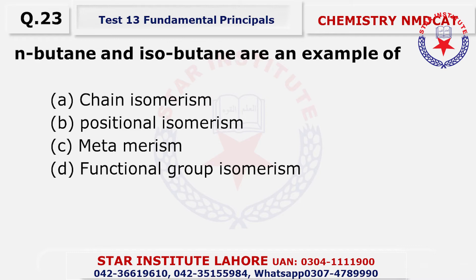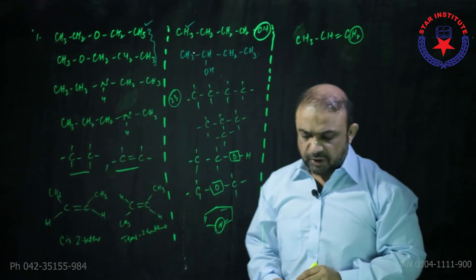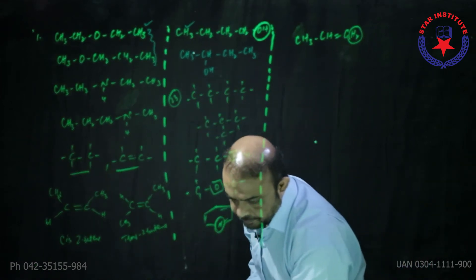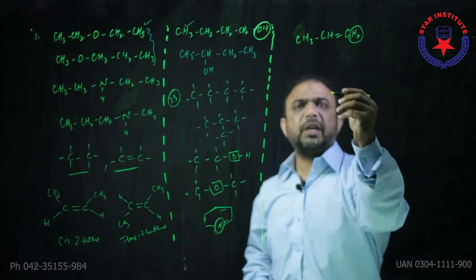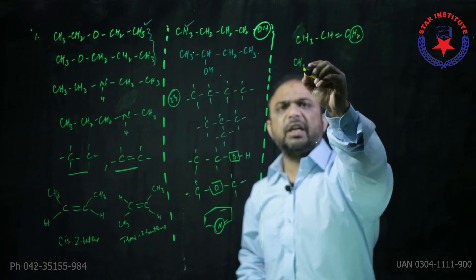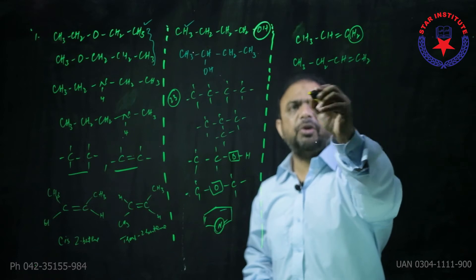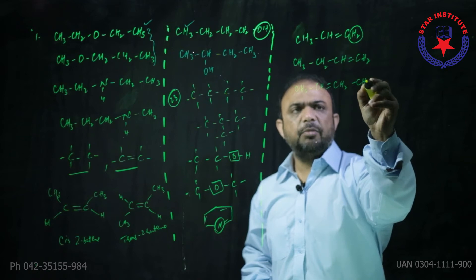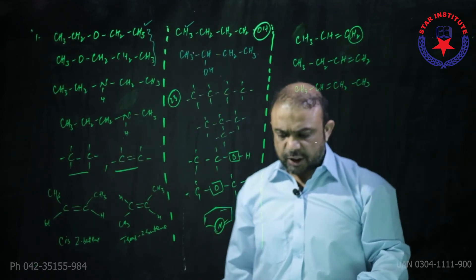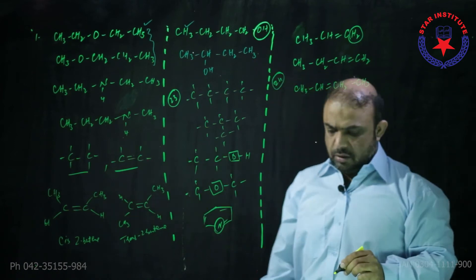Question number twenty-three: N-butane and isobutane — this is again the similar question. These will be chain isomers of each other — alpha choice. Question number twenty-four: Draw one and two and see what the difference is between them — one and two refer to positions. This one is 1-butene and that one is 2-butene — the difference between them is the positions. These are called positional isomers. So the choice for question number twenty-four is B.